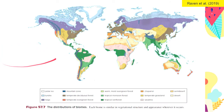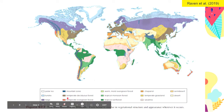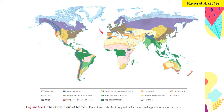We have this map to show us the major biomes of the world. The temperate deciduous forests are found in this part of America, major parts of Europe, and this part of China, and also Japan.